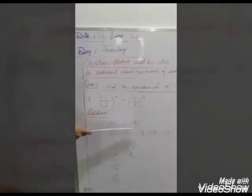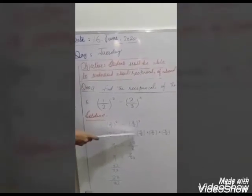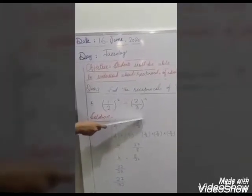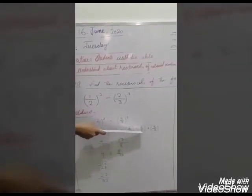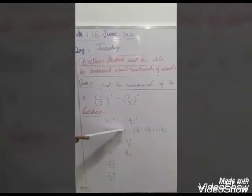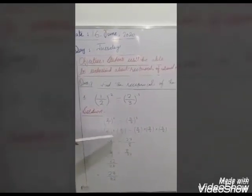So, 2 by 1 multiplied by 2 by 1 divided by 3 by 2 whole power 3, which means 3 by 2 multiplied 3 times: 3 by 2 multiplied by 3 by 2 multiplied by 3 by 2. Multiply numerator by numerator and denominator by denominator.